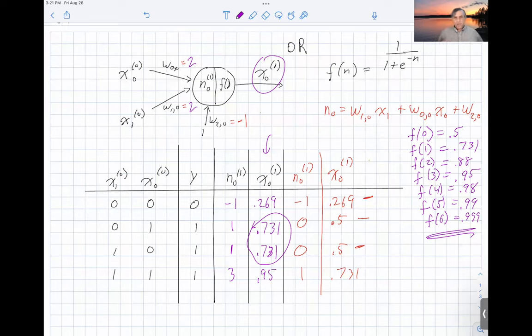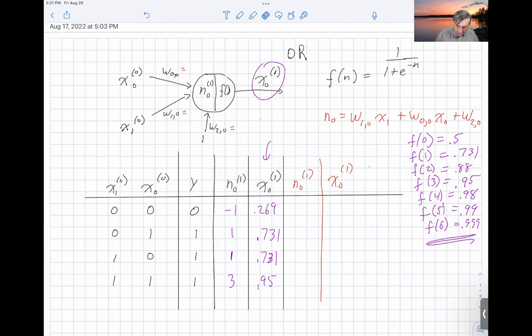We have a very reasonable pattern that we've established here, and really to start to make these values approach either zero or one appropriately, what we really need to do is to increase the magnitude of these parameters here. So let's go ahead and do that. I'm going to make these much larger. Let's make these 10 instead of 2, and let's make this negative 5 here.